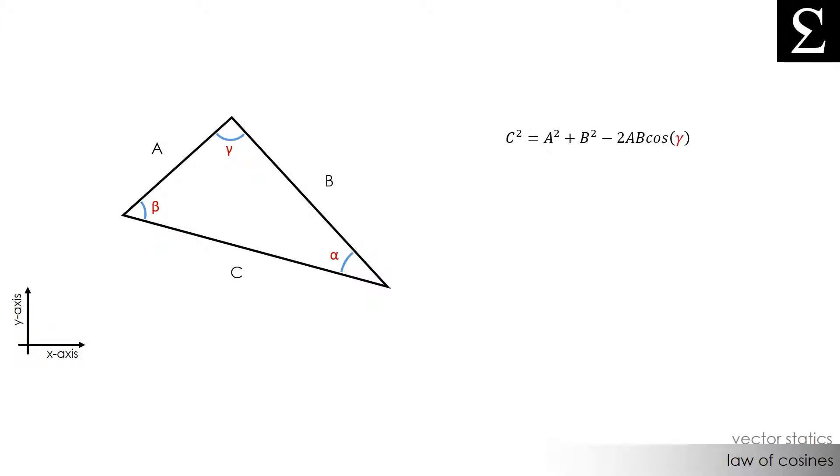The law of cosines states that the square of side c is equal to the square of side a plus the square of side b minus 2 times side a times side b times the cosine of gamma.